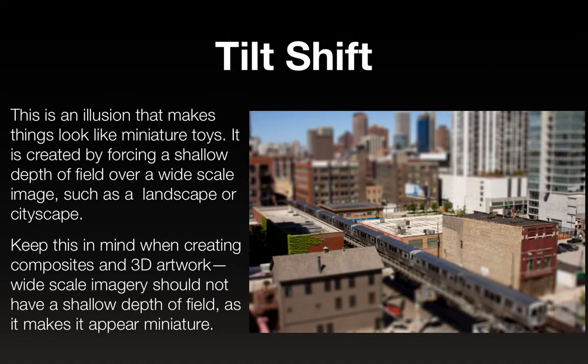Tilt shift is an illusion that makes things look like miniature toys. It's created by forcing a shallow depth of field over a wide-scale image such as a landscape or cityscape. Keep that in mind when creating your composites and 3D artwork — wide-scale imagery should not have a shallow depth of field as it makes it appear miniature. The alternative assignment for this unit is to play with perspective, so you might actually want to try this and experiment with it.